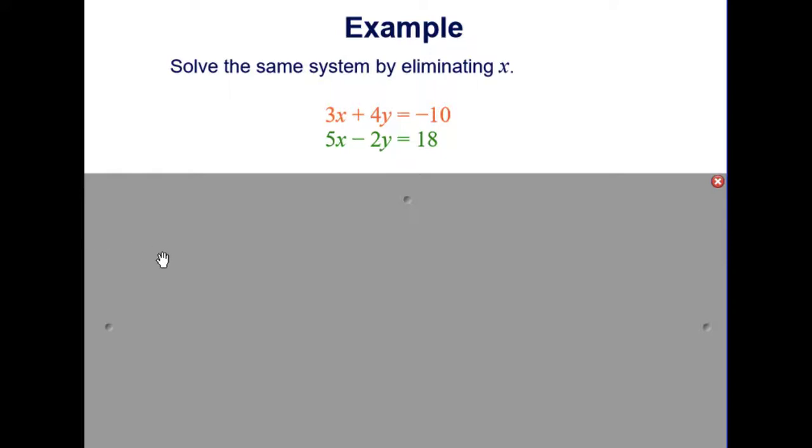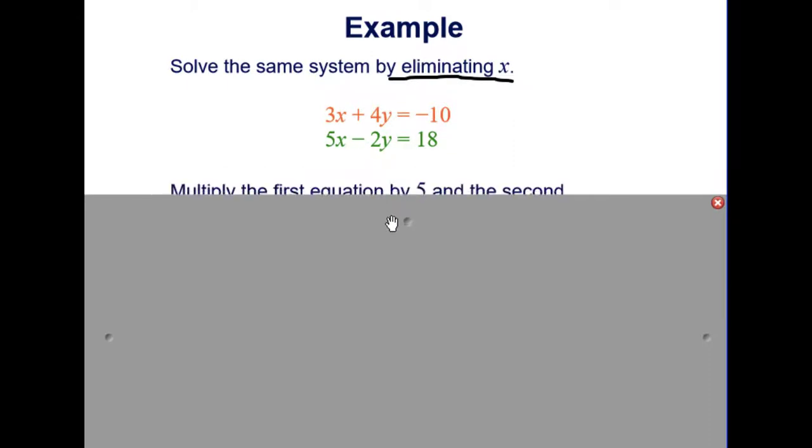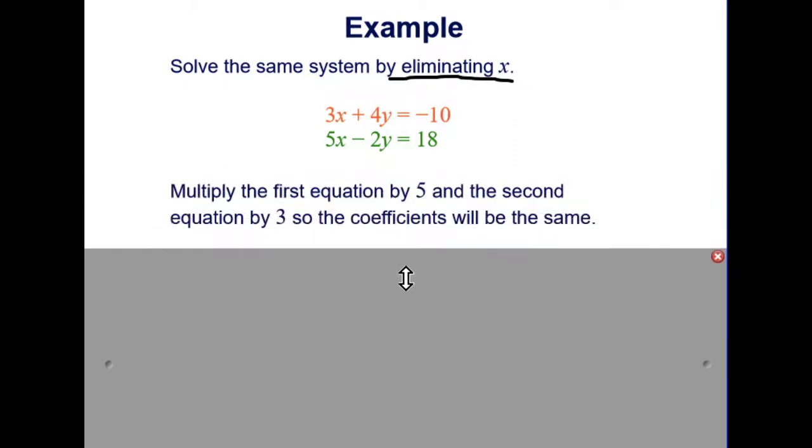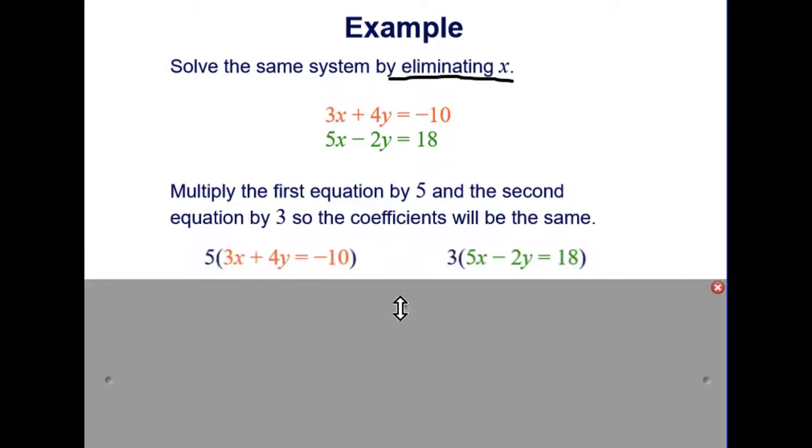Here's a different one. Now we have, or a different way, we have the same exact system, but now let's try eliminating the x. So we have 3x and 5x. So let's multiply the first equation by 5 and the second equation by 3 so that the coefficients will be the same.